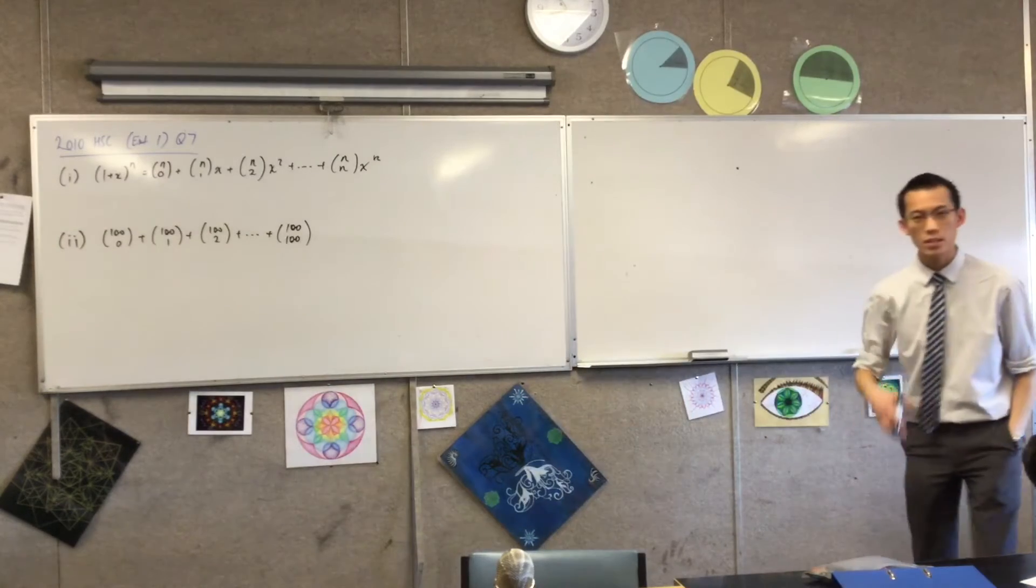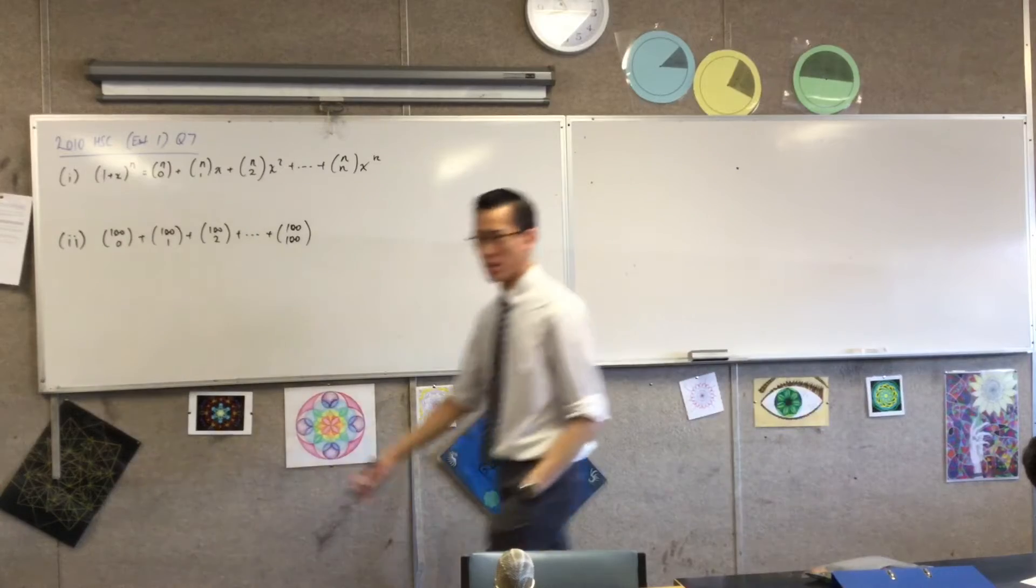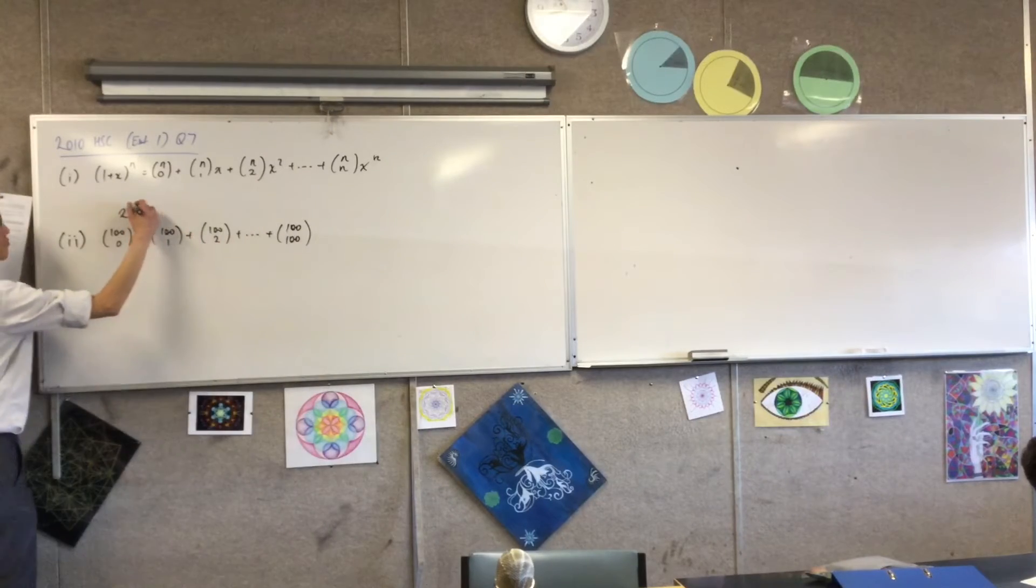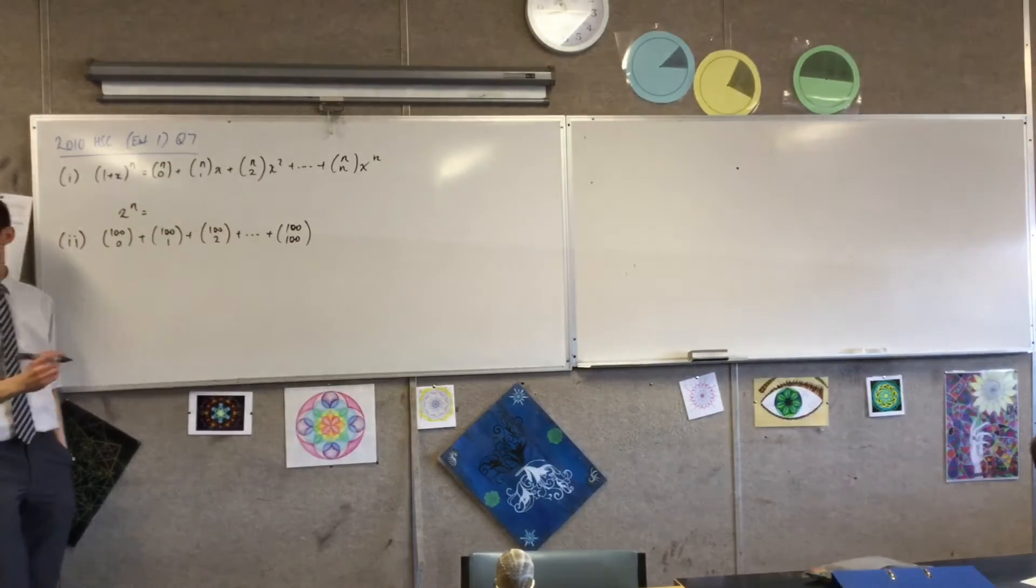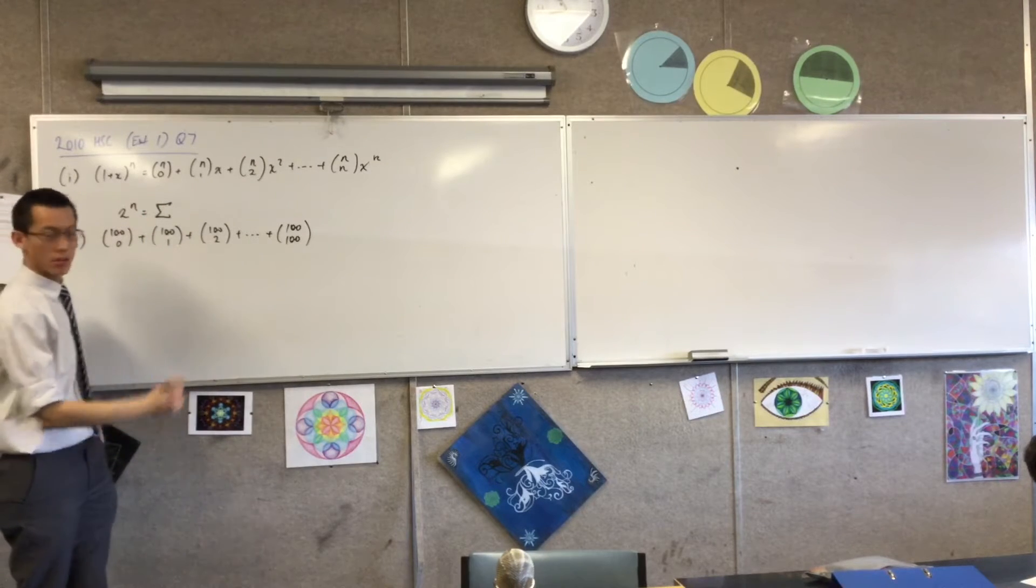Here's part 1. Here's what we're given, and there's a result there on the page that I believe is 2 to the n, and there's some sigma notation. What are we adding up? The sum of K equals 0 to n.